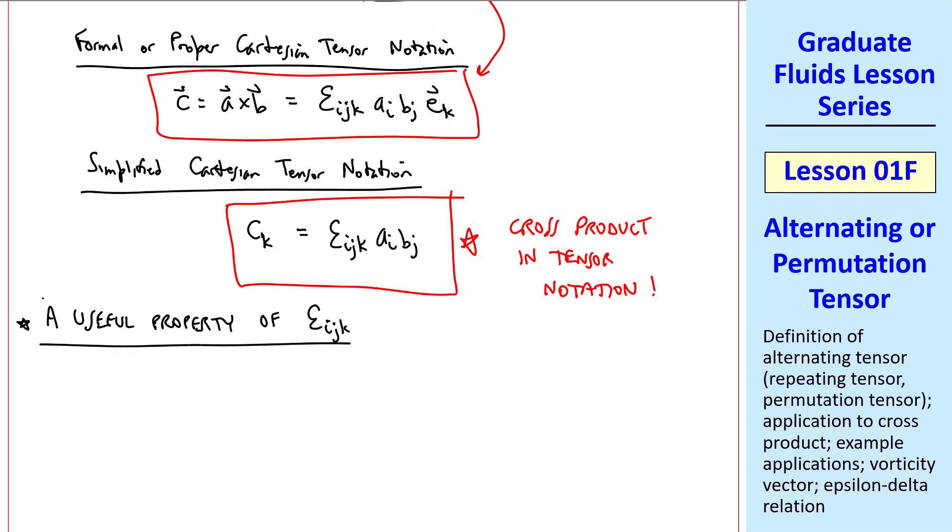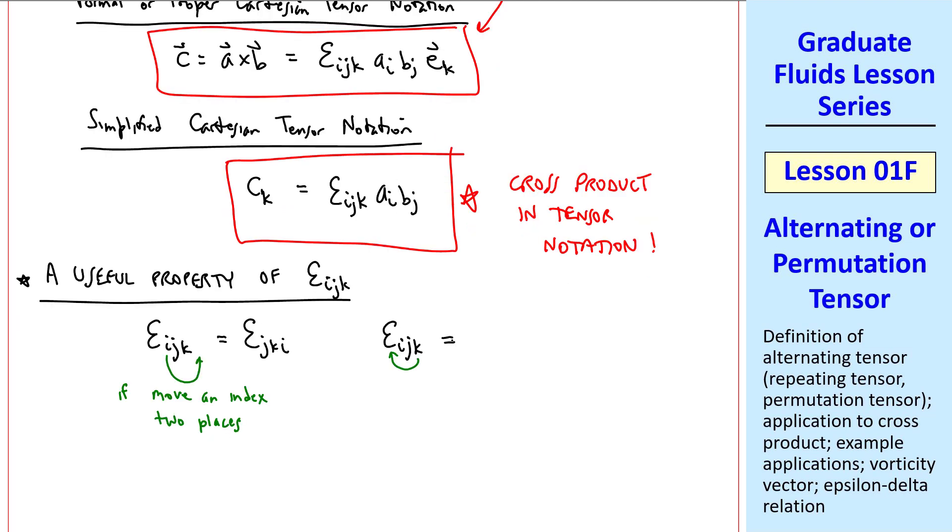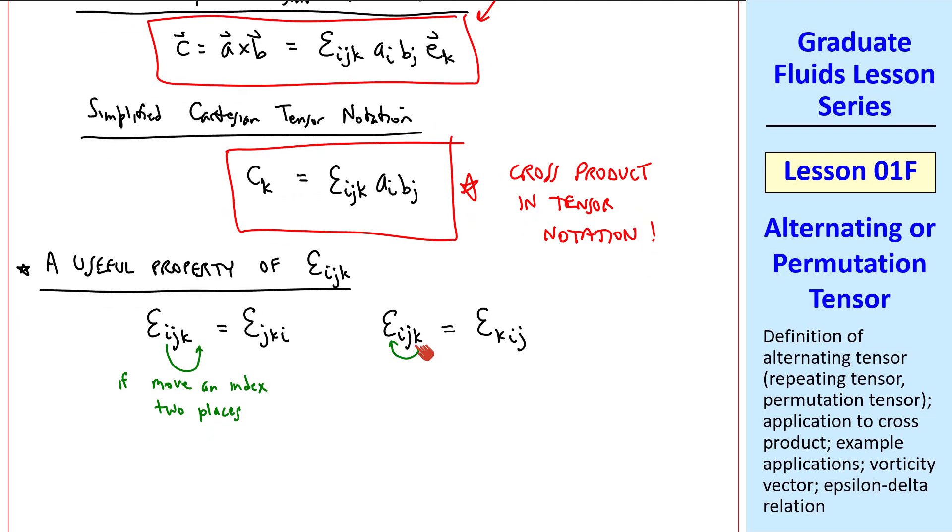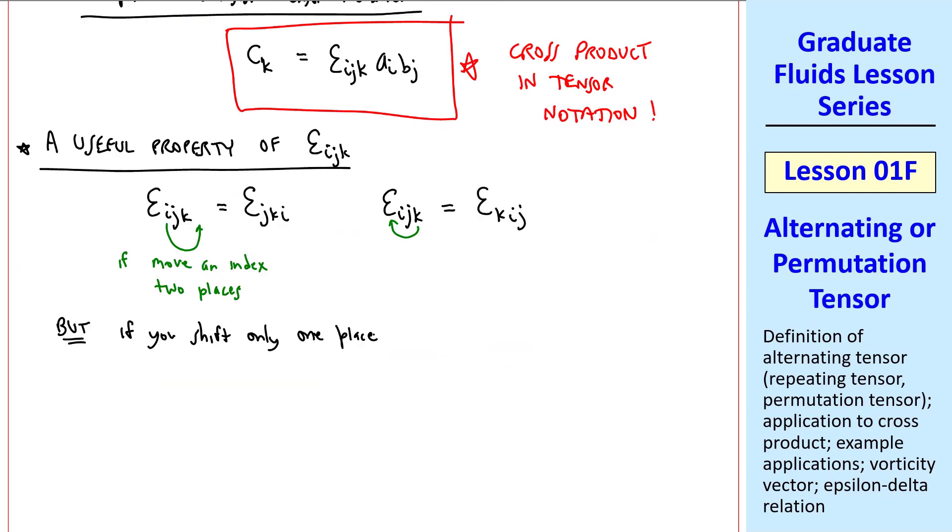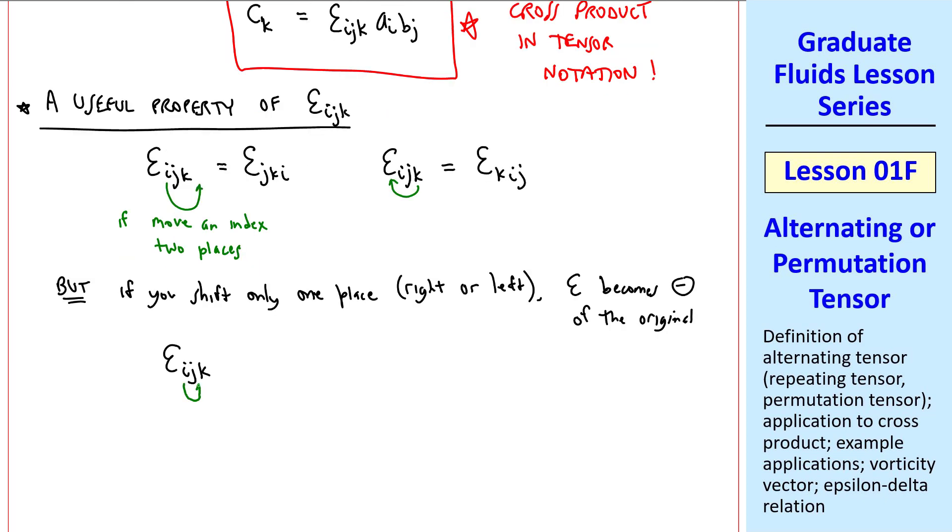Here's a useful property of epsilon_ijk. If we move an index two places, such as moving the i over two spaces, we get the same result. This also holds if we move an index to the left. But if you shift only one place, right or left, epsilon becomes the negative of the original value. For example, if we move the i just one place, we get the negative of the value. This works whether moving to the right or moving to the left.